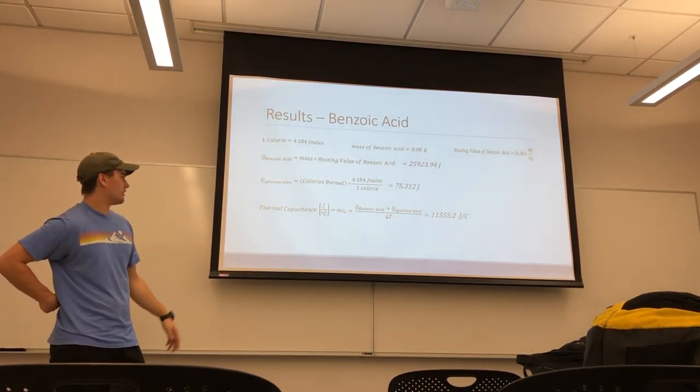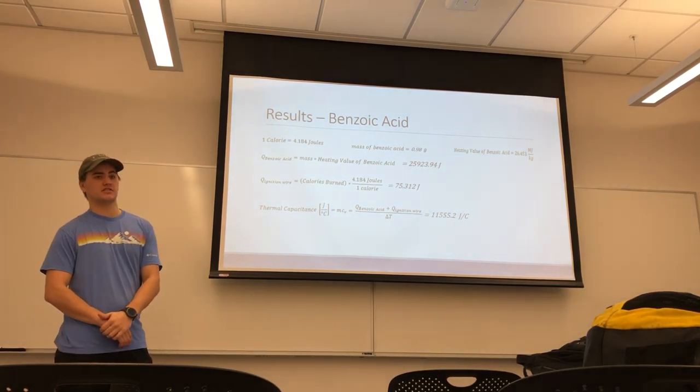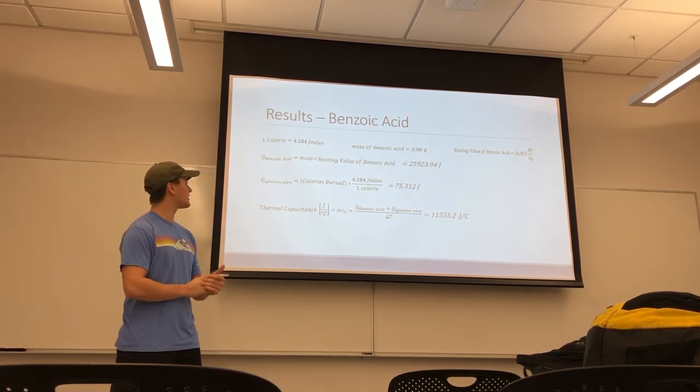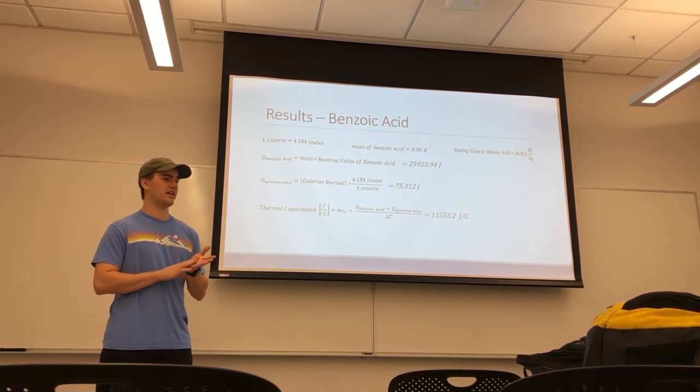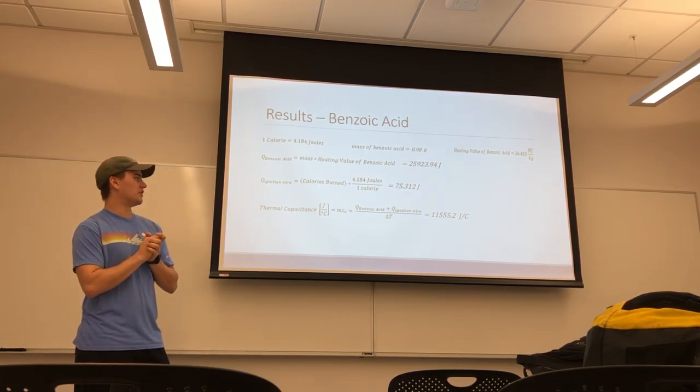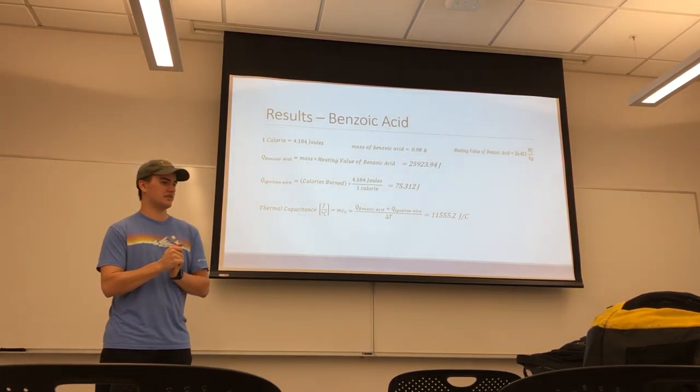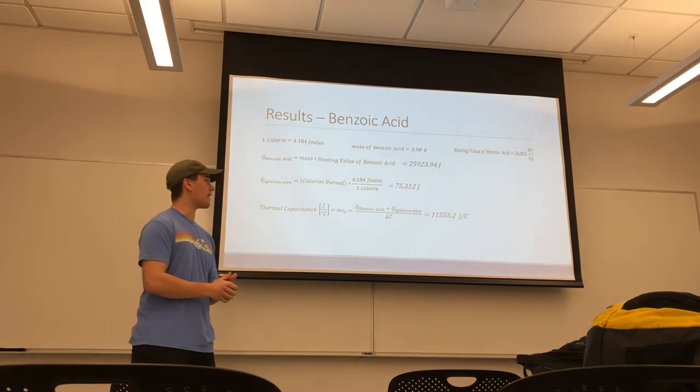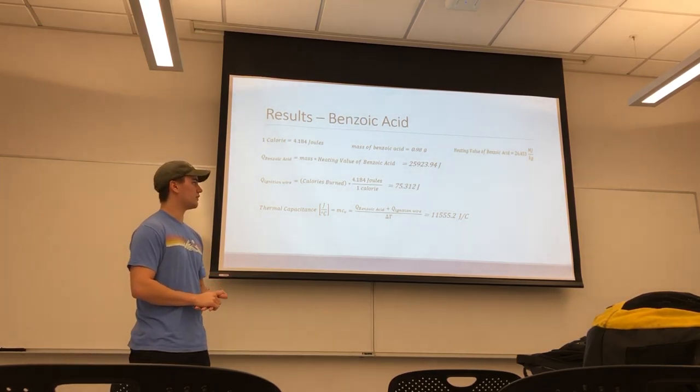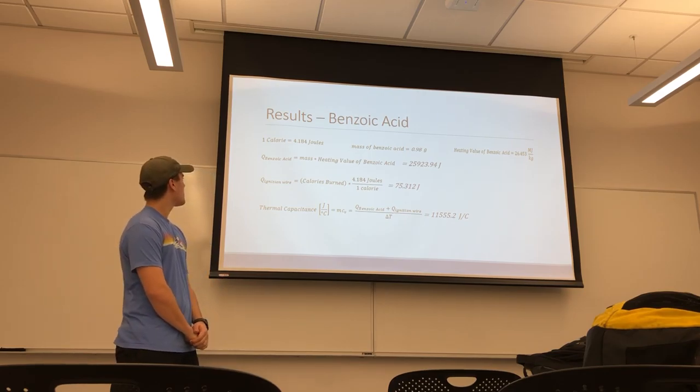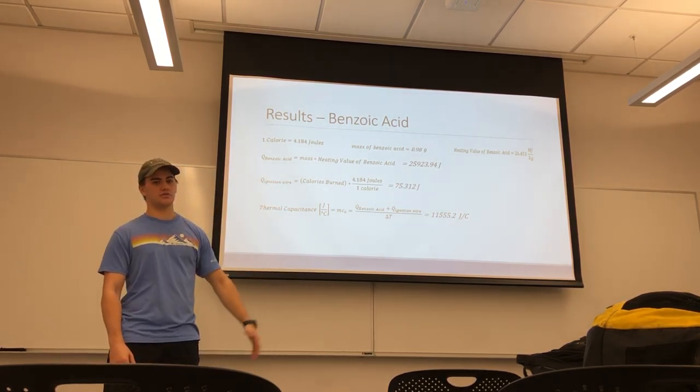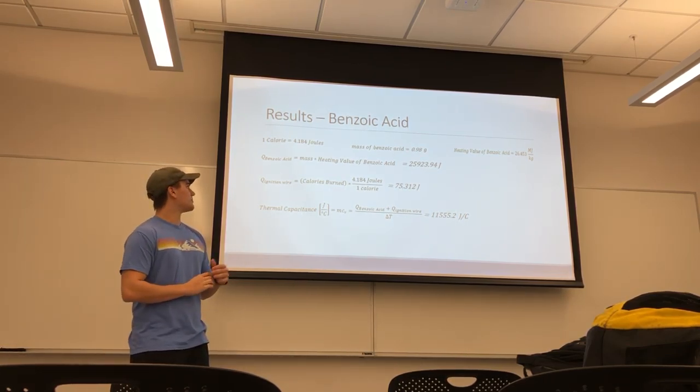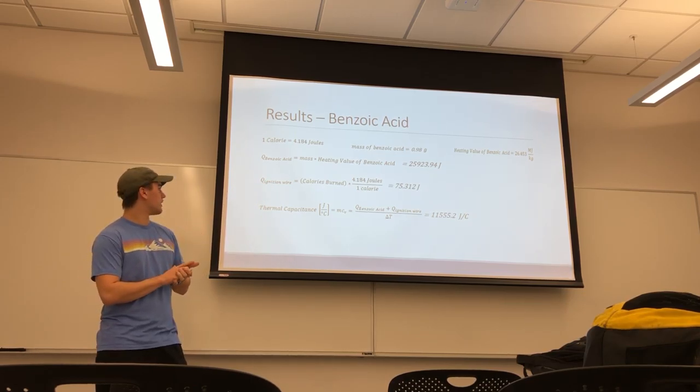In order to calculate the thermal capacitance of the benzoic acid, we would start with the mass of the benzoic acid sample, which was about 0.98 grams. And we know the heating value of benzoic acid just by either looking on the container in the lab or researching online, and you'll find that it's 26.5 megajoules per kilogram. And so then you can calculate the heat transfer for the benzoic acid. So it's going to be the mass of the sample times the heating value. You get that heat transfer value.